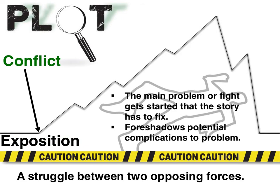Then we start getting introduced to the conflict. Remember, this is going to be the problem that our main character has to face. In literature, we call it a struggle between two opposing forces — things that are at odds. So this is where we're going to find out what is the problem that needs to be fixed in this story, and any complications — is there a character who is going to be getting in the way of our main character from being able to solve this problem?